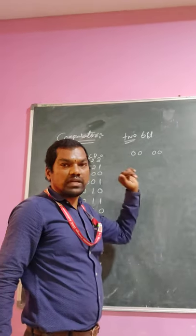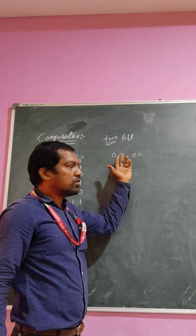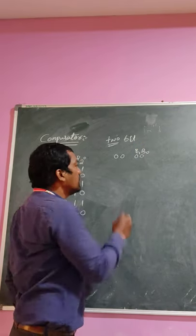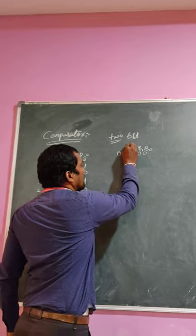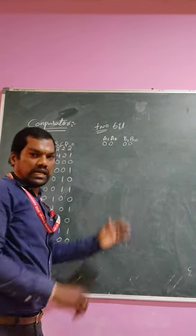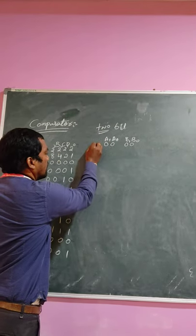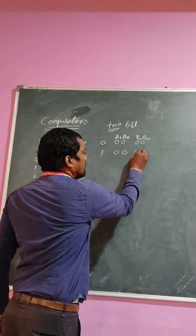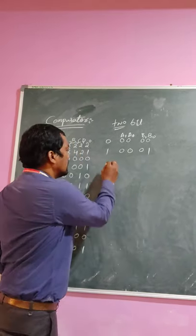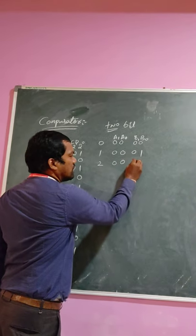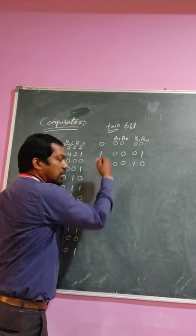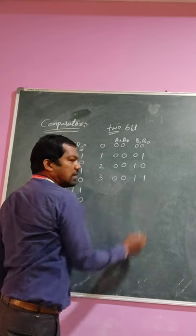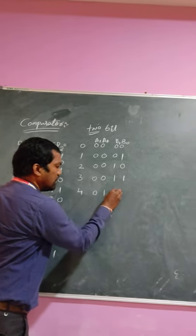So how we can say it is a 2-bit? We are taking two 0s. I am giving the name B0 and B1 for one variable, and A0, A1 for the other. For decimal 0: 0, 0. For decimal 1: 0, 0, 0, 1. For decimal 2: 0, 0, 1, 0. For decimal 3: 0, 0, 1, 1. For decimal 4: 0, 1, 0, 0.